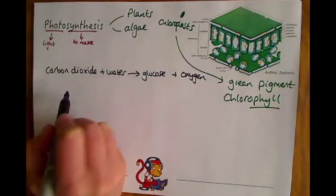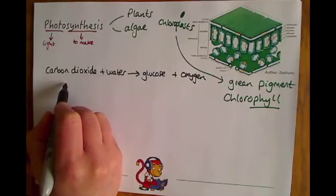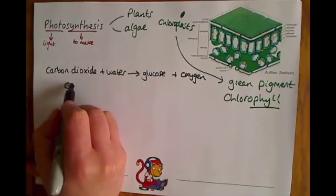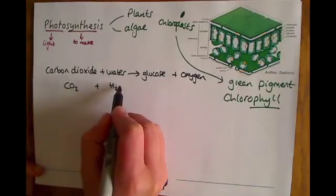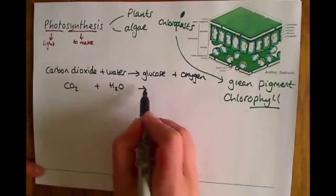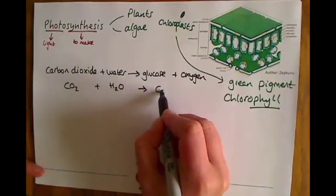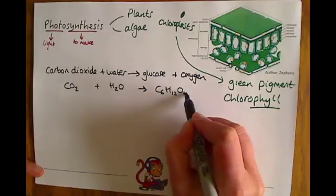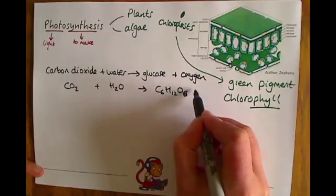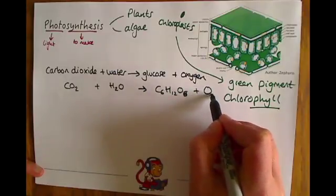If we were to write the symbol equation, which you may or may not see, then carbon dioxide is CO2 plus H2O makes glucose C6H12O6, plus O2.